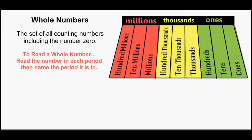Here, on our place value chart, we have the first three periods: the ones, the thousands, and the millions.